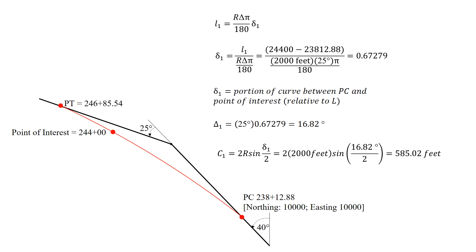We can now find the chord length from the PC to our point of interest, and that's 2 times the radius times sine of lowercase delta 1 divided by 2. So that's 2 times 2,000 feet times the sine of 16.82 degrees divided by 2, and that's a chord length of 585.02 feet.